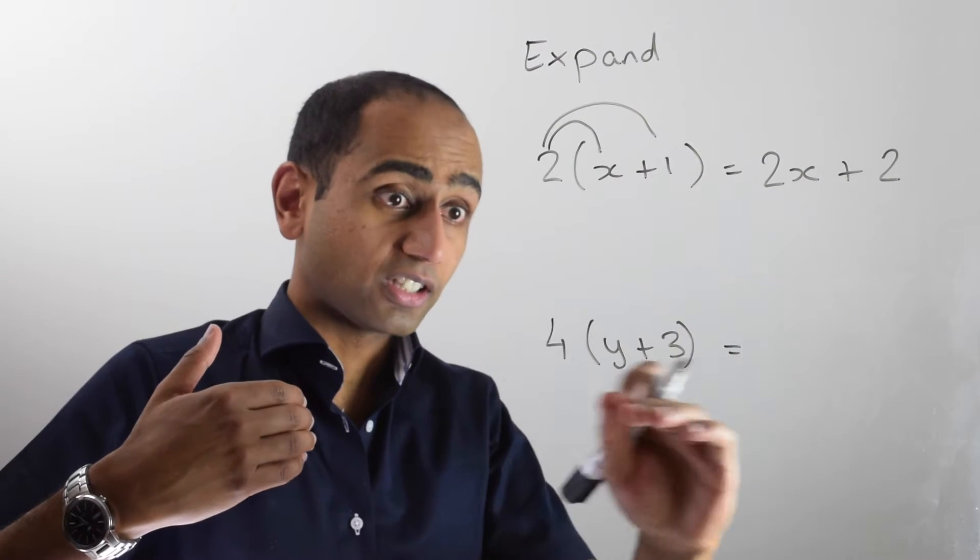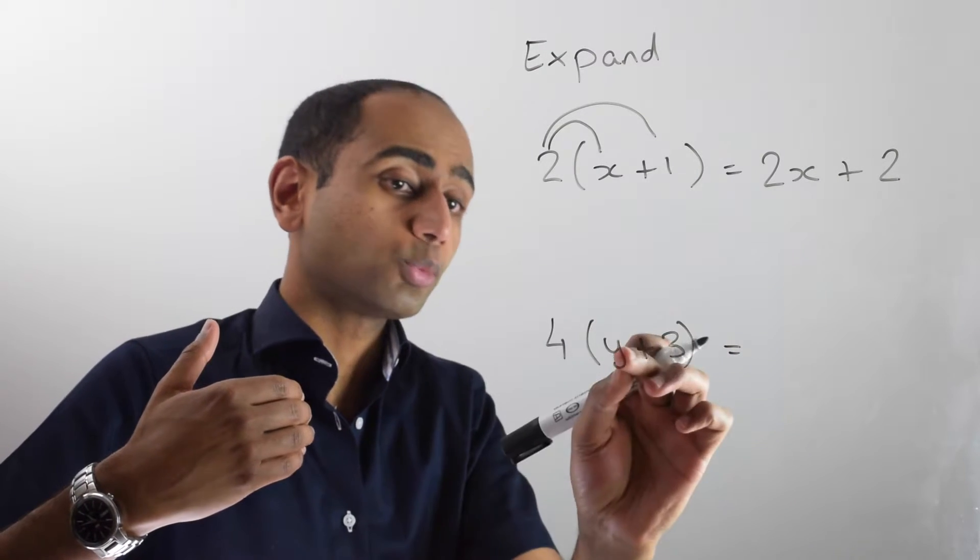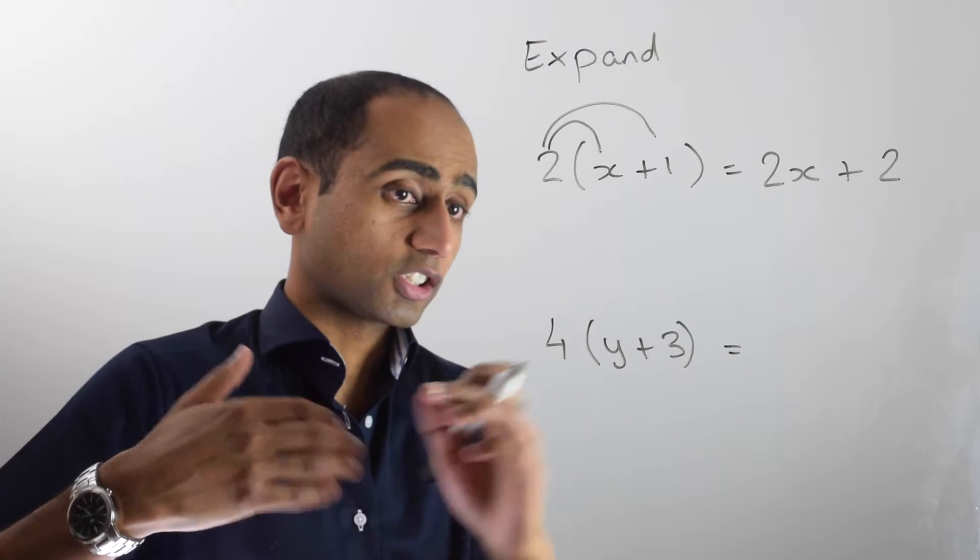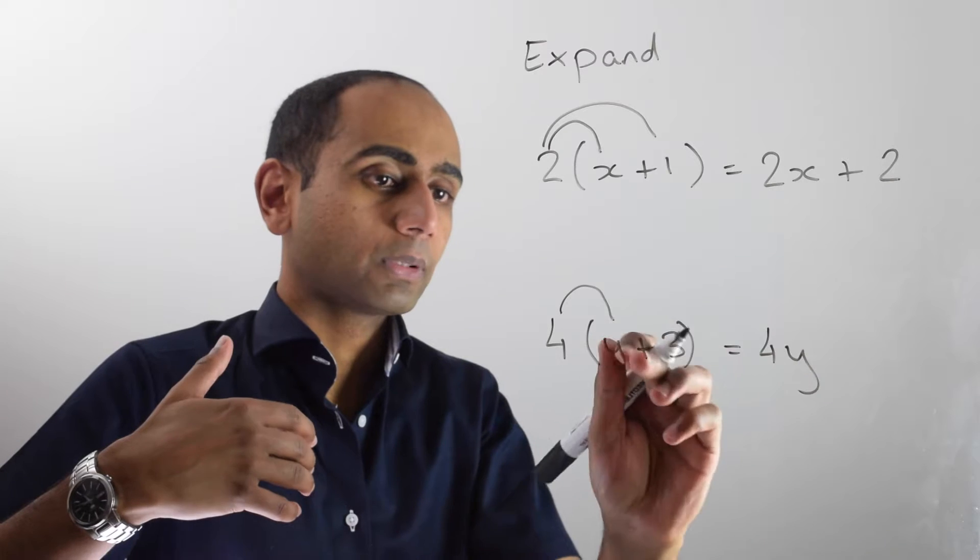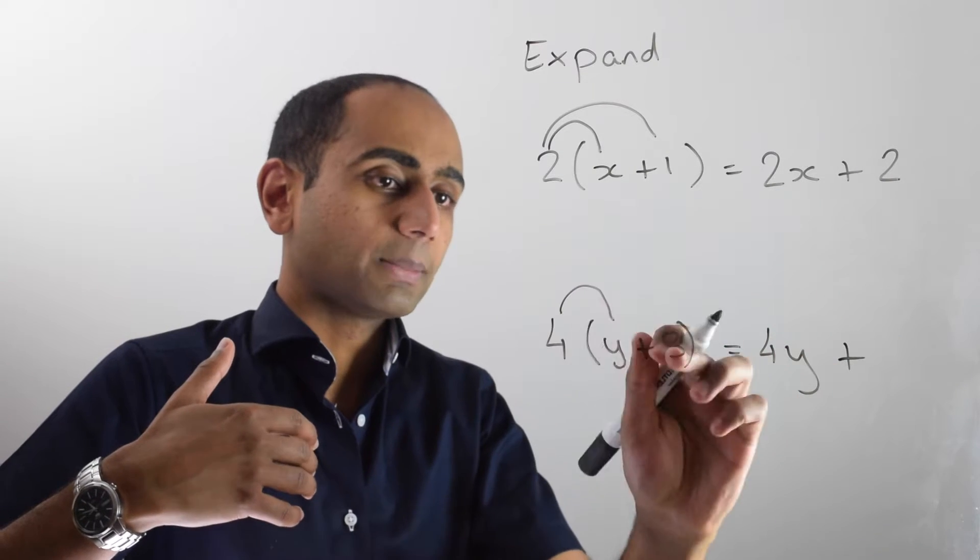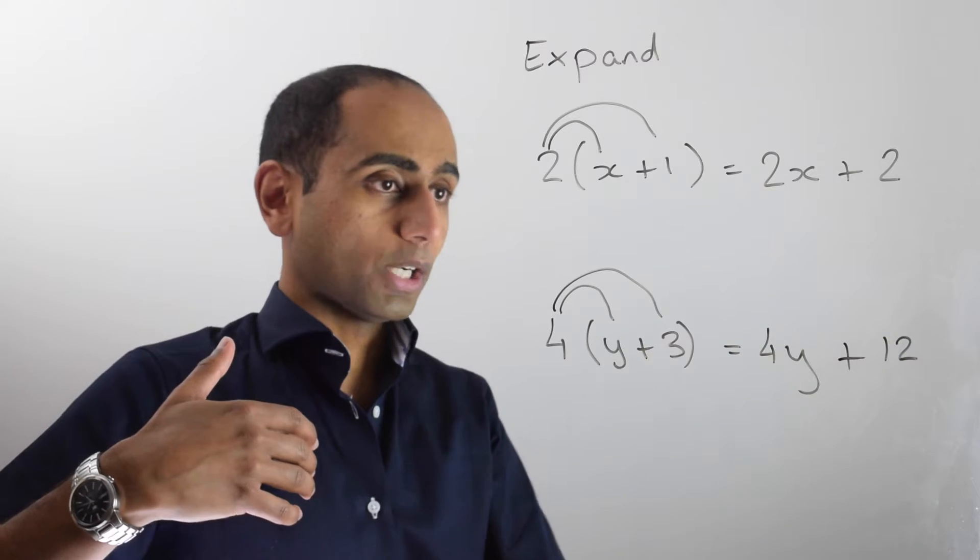We apply the same method to the second example. We've got four lots of y plus four lots of 3. So that's going to be 4 times y, or 4y, plus 4 times our 3, which is 12.